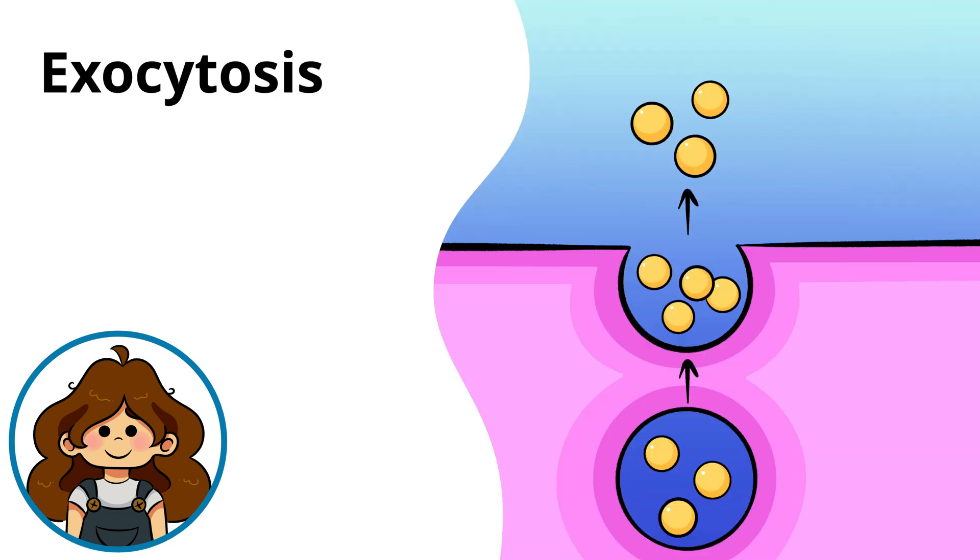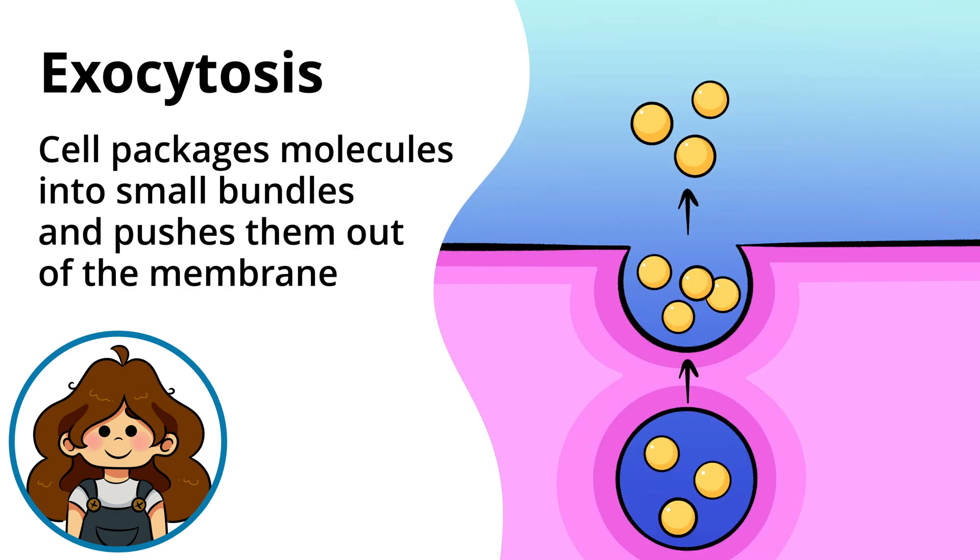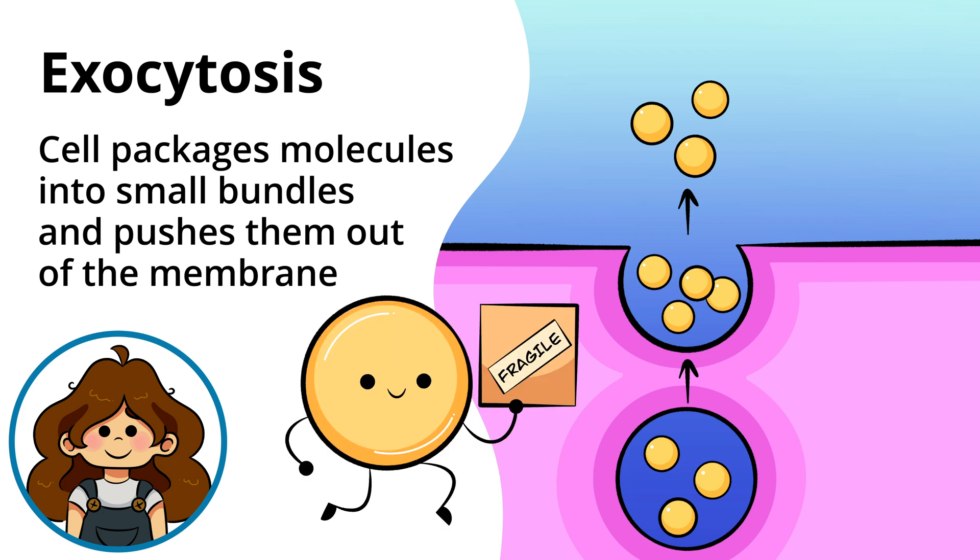On the other hand, exocytosis is where the cell packages large molecules into small bundles called vesicles and pushes them out of the membrane. This is like the cell spitting something out. Bleh! For example, proteins made inside the cell can be packaged and sent out to other parts of the body using exocytosis.